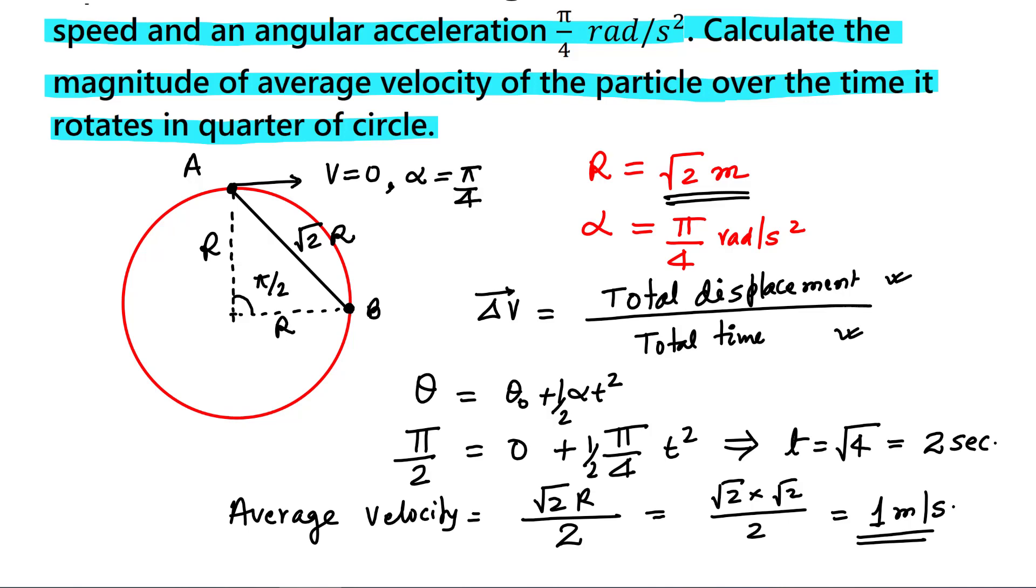Now I give you one question. What will be the average velocity if this particle reaches to the point C, which is diametrically opposite? Let us give the answer in the comment box. What will be the average velocity if the particle reaches to point C?